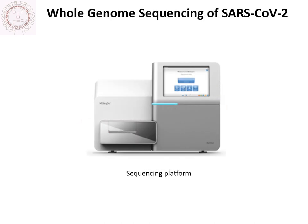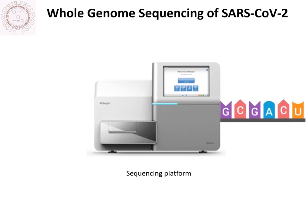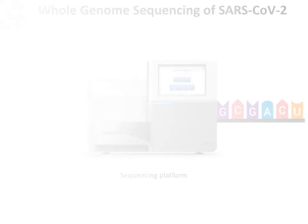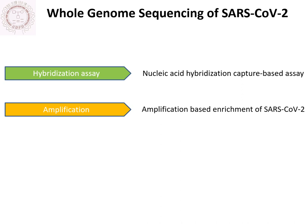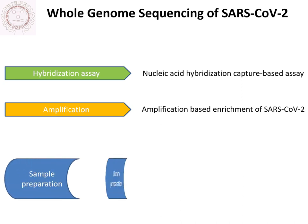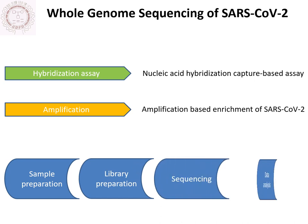Next-generation sequencing technology is unraveling the precise and detailed genetic information of positive COVID-19 cases. This is achievable by both nucleic acid hybridization capture-based assays, as well as amplification-based enrichment for SARS-CoV-2. All these applications require the workflow of sample preparation, library preparation, sequencing, and data analysis.